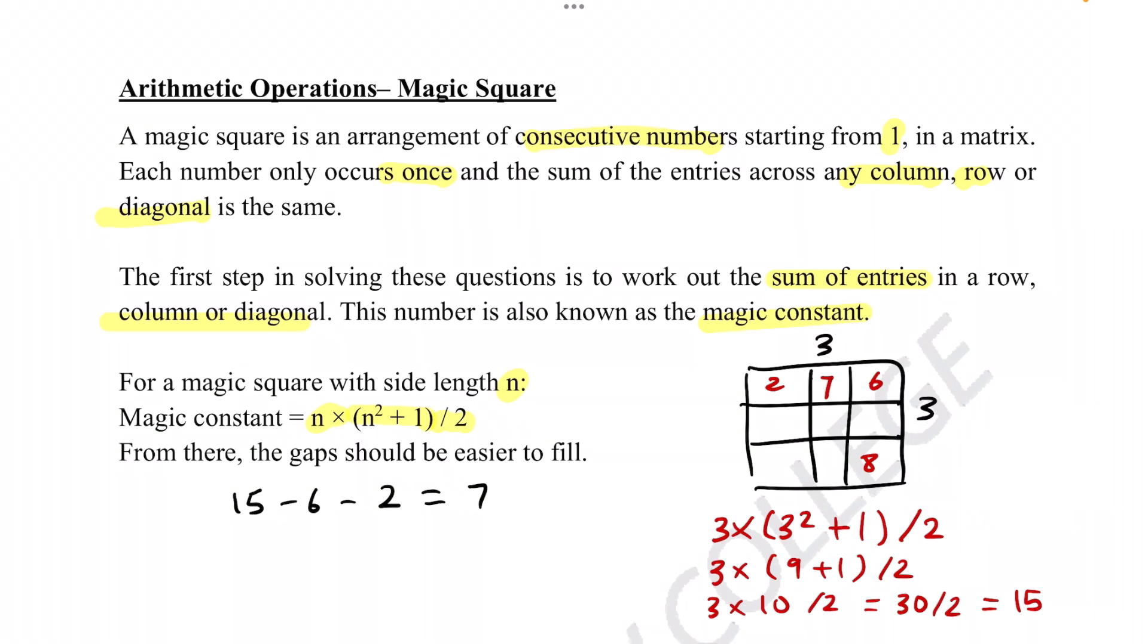Once again, we can do the same going down. 15 minus 6 minus 8 equals 1. Now let's do the diagonal. 15 minus 8 minus 2 equals 5, since 8 plus 2 is 10, so it'll be 15 minus 10, which equals 5.